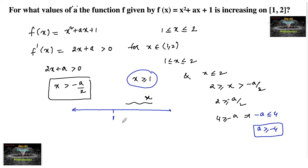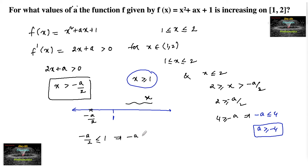Suppose -a/2 is below 1; then there is one possibility where -a/2 ≤ 1. So we have -a ≤ 2, or a ≥ -2.